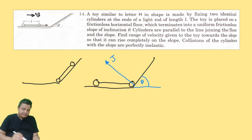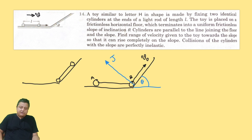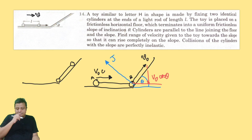Just after the impact, let's name the balls A and B. The velocity of ball B will be v₀, perpendicular to the slope. For ball A, its velocity is along the horizontal direction. By equating velocity components along the rod, the velocity of ball A is v₀ cos θ.